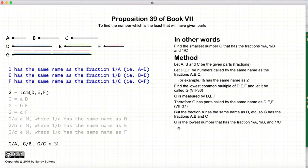We also state that G is the lowest number that has the fraction of A, B, and C. So to prove that...